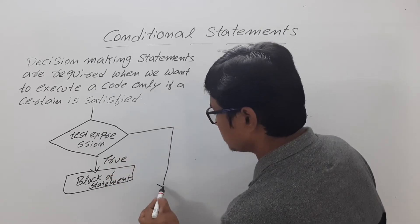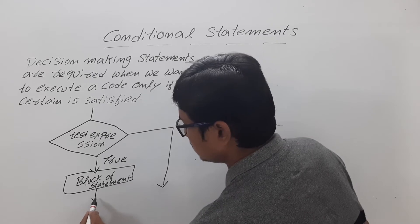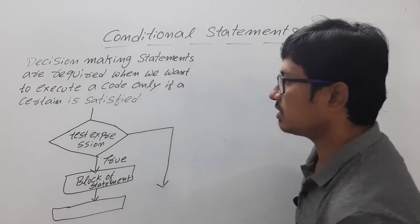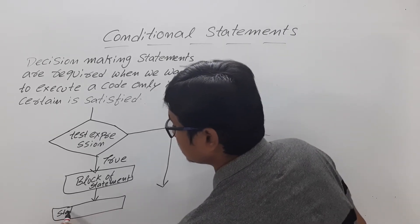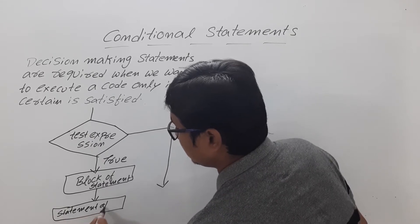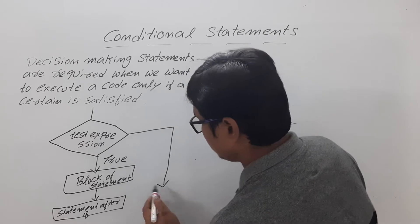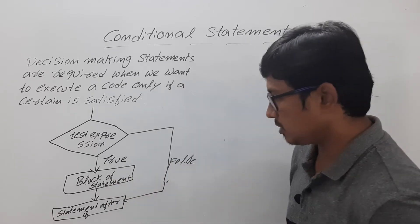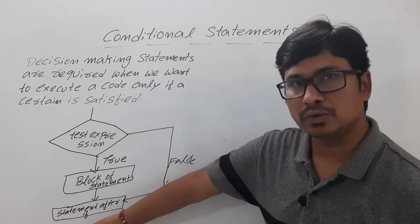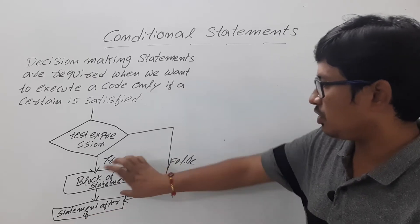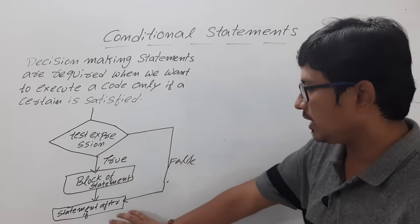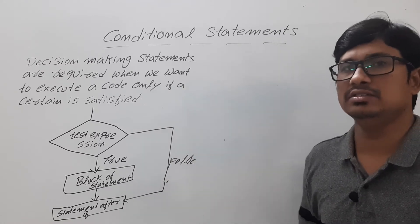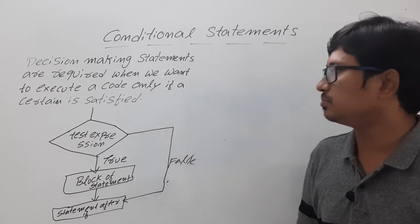If the condition is false, we will execute the statement that is outside the if block — the statement after the if. If the condition is true, you execute the block of statements and then proceed to the next statement. If the condition is false, you skip the block and directly execute the statement after the if. Now let me write the syntax for the simple if.